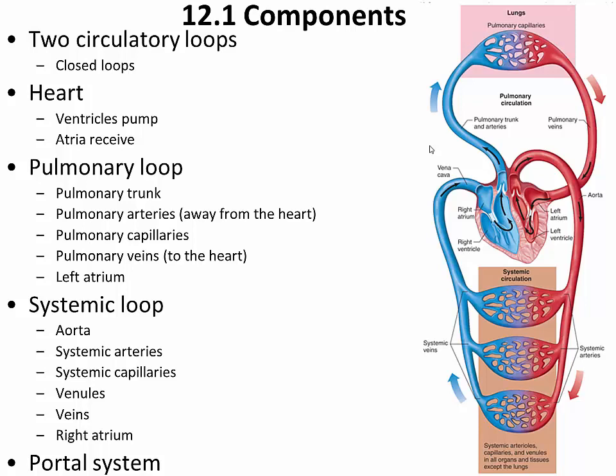A portal system occurs when blood leaves the heart, passes through one capillary bed, then travels through portal vessels to a second capillary bed before returning to the heart. We find portal systems in two places in human physiology. One is between the hypothalamus and the anterior pituitary. The second is the hepatic portal system in the digestive system, where blood from capillaries surrounding the small intestine passes through portal vessels to the liver — adaptive because any toxins absorbed during digestion can be removed before blood returns to general circulation.